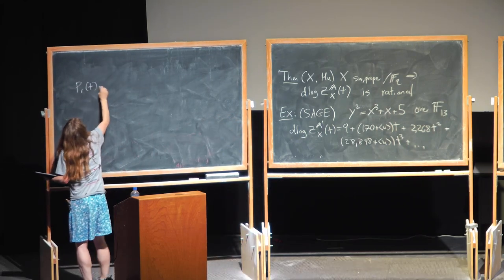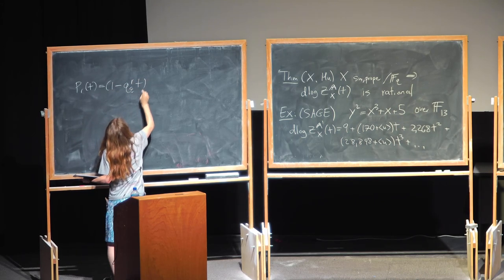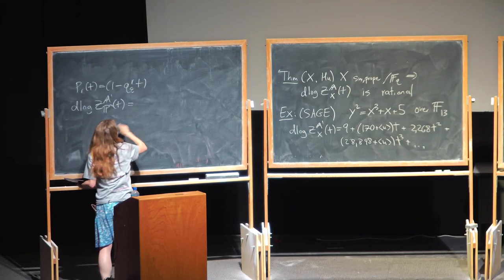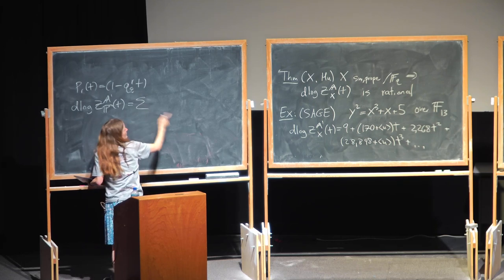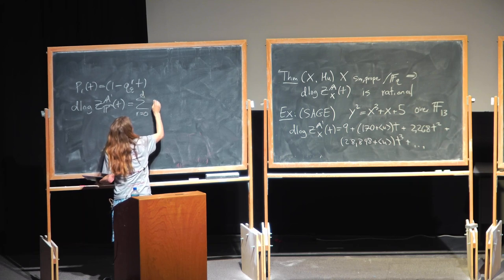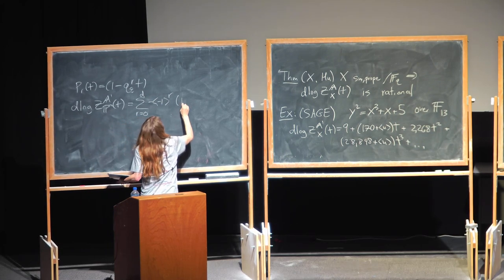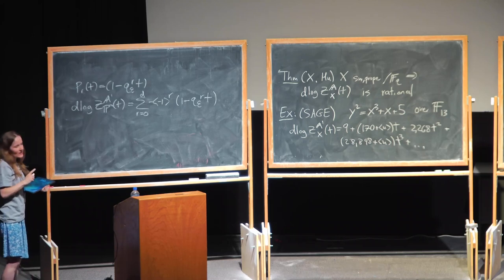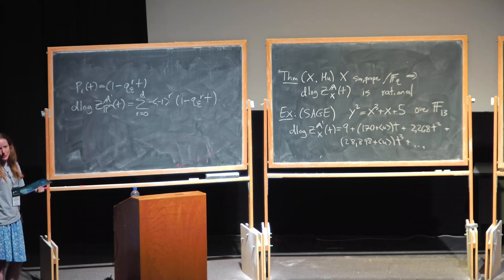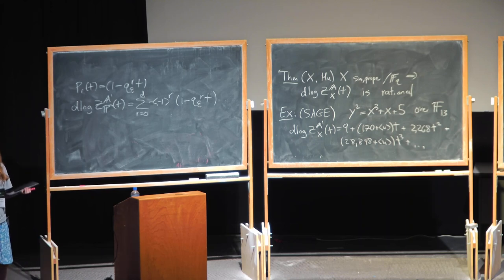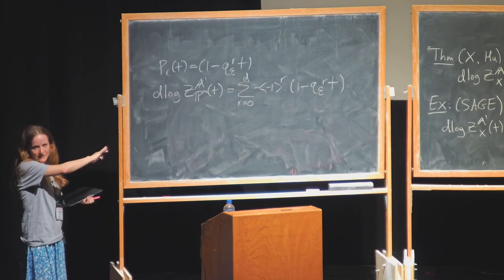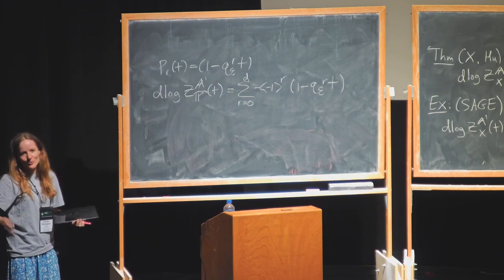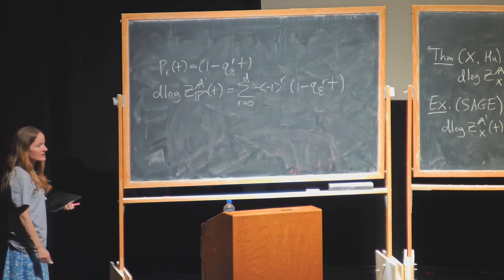So it's believable that when Frobenius acts on a homology theory picking up the quadratic part, on the r-th cell it acts like q_ε^r — and that's indeed true. So P_r(t) = 1 − q_ε^r · t, and d log ζ_{P^n, A1}(T) is the sum via that formula for r = 0 to n of ⟨(−1)^r⟩ over (1 − q_ε^r · t). You can compute the number of points in P^n over a finite field and verify this with appropriate trace forms.